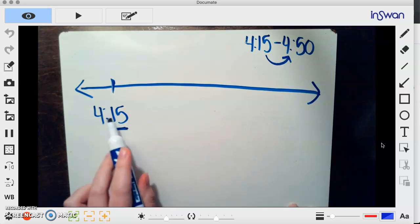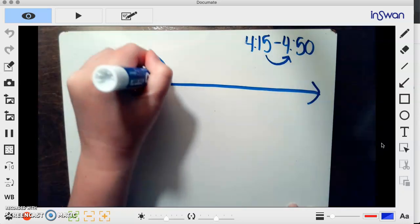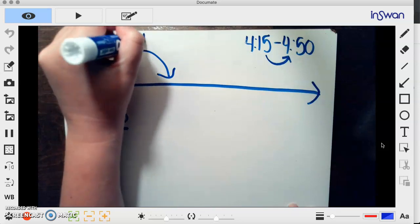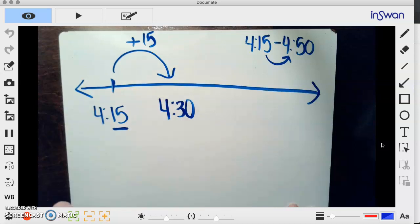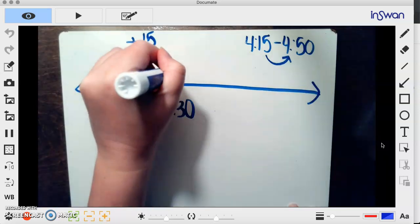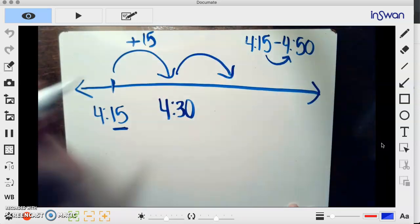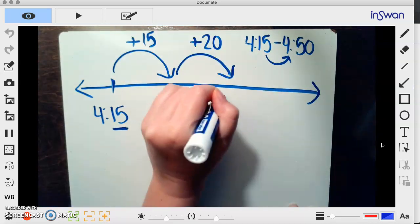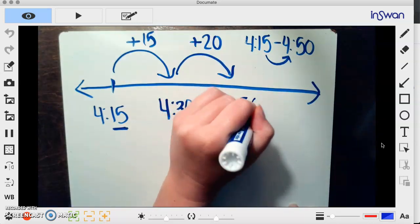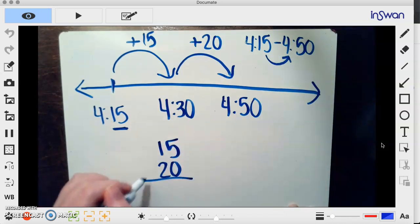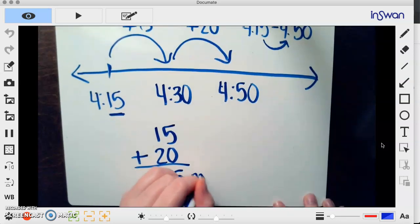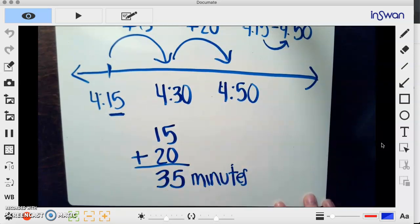We know that our hour stays the same—it's still within four—so we're just focusing on our minutes. I'm at 15 now, and I'm going to go ahead and do a jump and add 15 more minutes, which will bring me to 4:30. Now I'm going to do another jump of 20 minutes, which will bring me to 4:50.